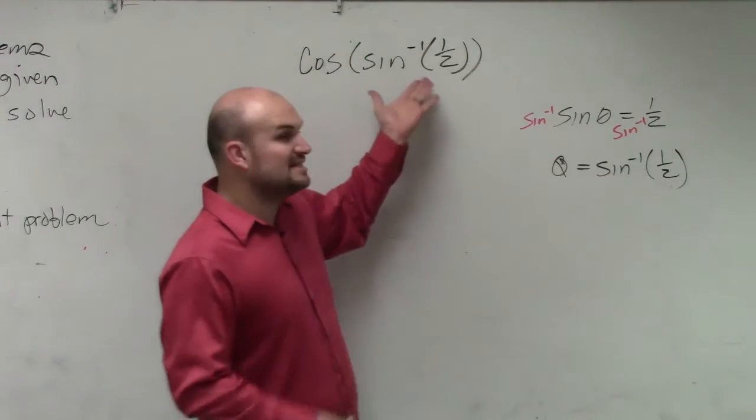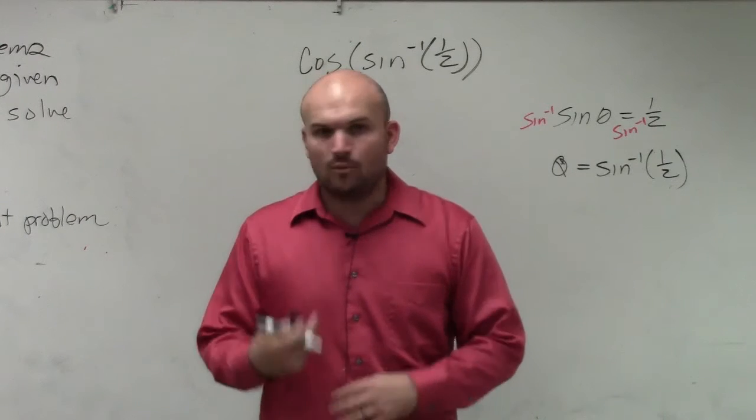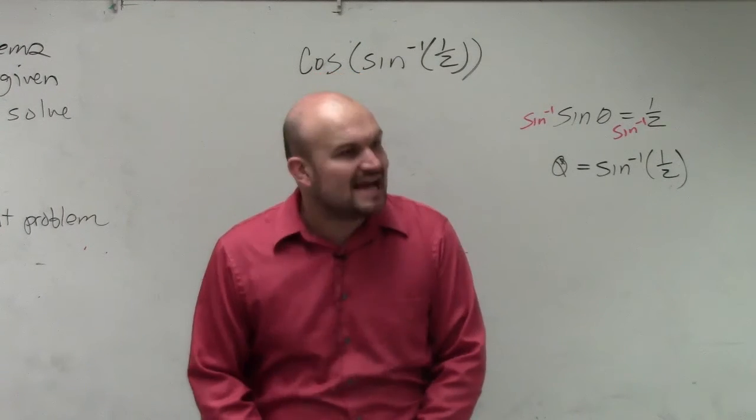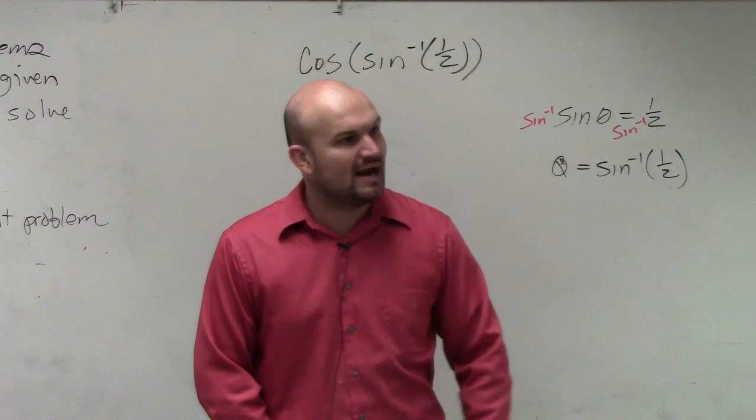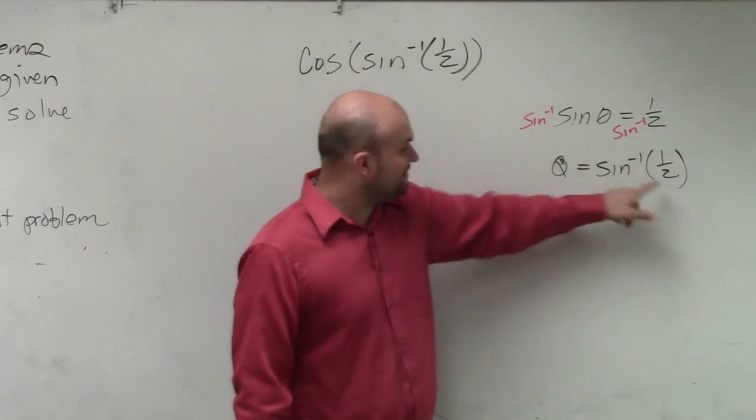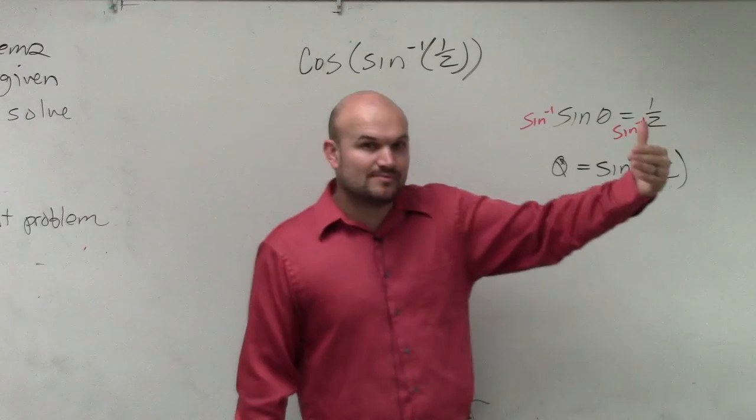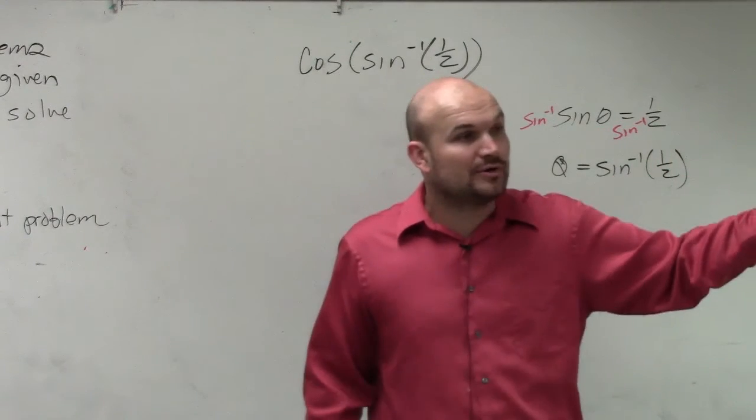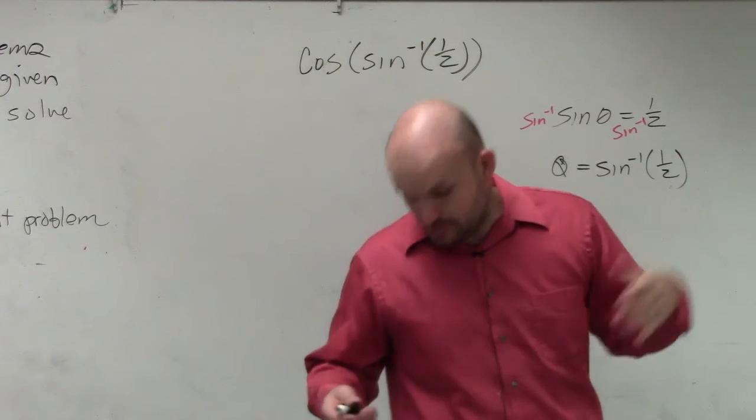So when you look at this and you see sine inverse of 1 half, if you're looking to evaluate that, what exactly are you doing? You're finding the angle that produces this 1 half for sine. Does that make sense? The sine inverse of 1 half, the value of that is your angle. So the best way we can do that is really saying, what angle, when you take the sine of it, produces 1 half?